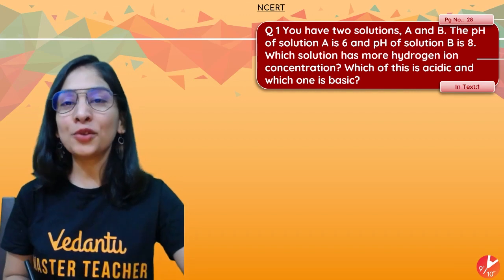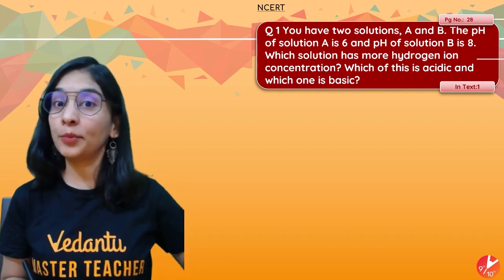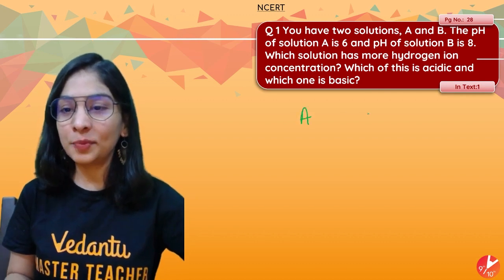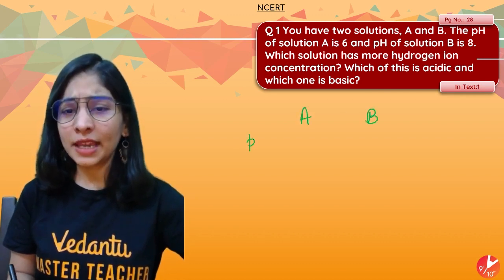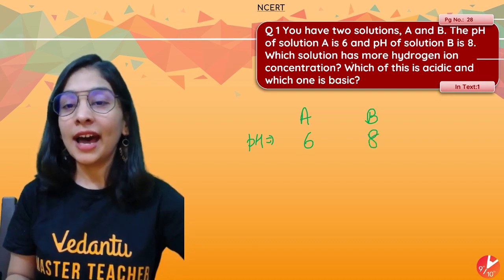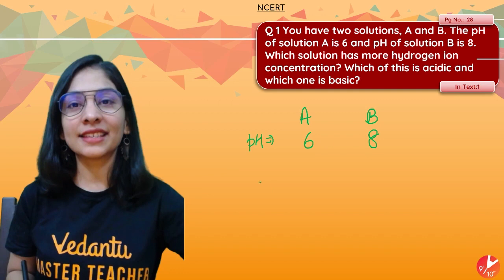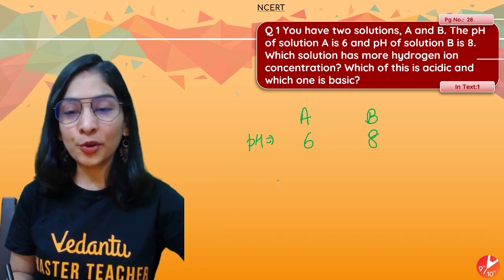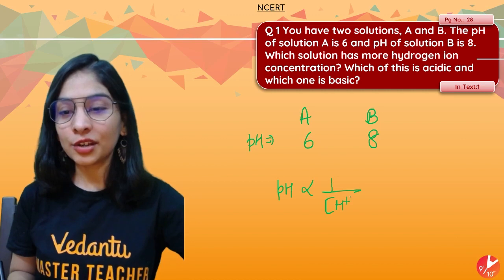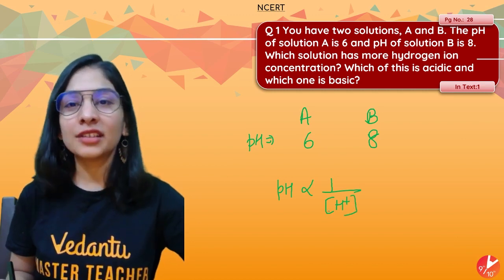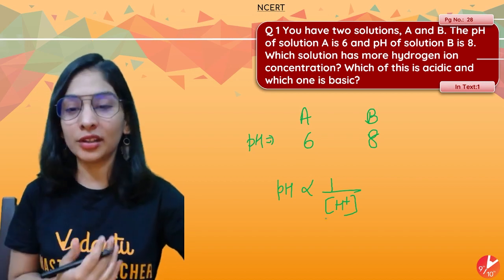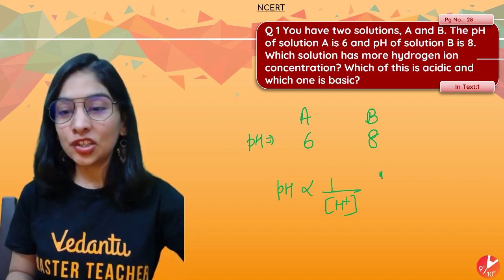Let's move to question number one. This question is very important. You have two solutions A and B. The pH is given here as 6 and 8. Which solution has more hydrogen ion concentration and which is less acidic, which is basic? I hope you remember that pH is inversely proportional to concentration of H+ or concentration of hydronium ion.